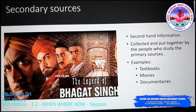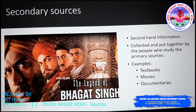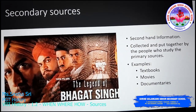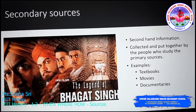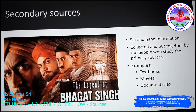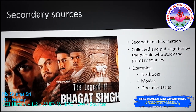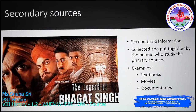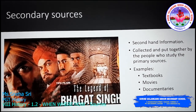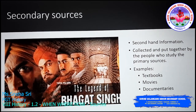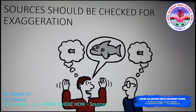Secondary sources are second-hand information — the people who study the primary sources collect information, analyze it, and present the information in their own style. They are the secondary sources. Examples of secondary sources are movies, documentaries, and textbooks. Even our textbooks which we use for study are examples of secondary sources.